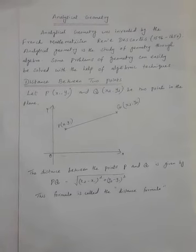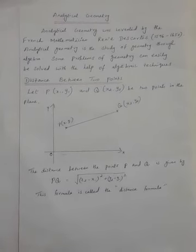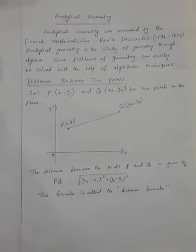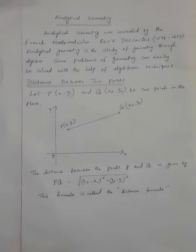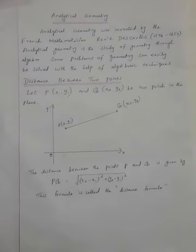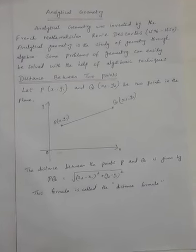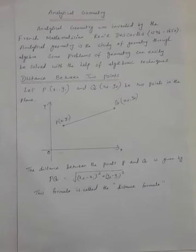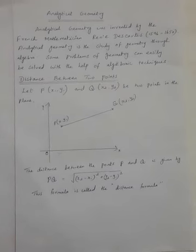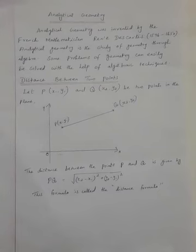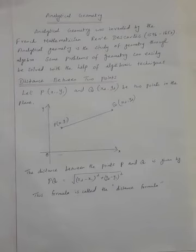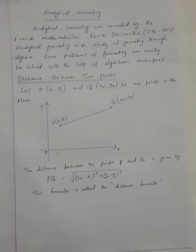Distance between two points in the plane. Let P(X1, Y1) and Q(X2, Y2) be two points in the plane. This diagram shows that the distance between the points P and Q is equal to the square root of (X2 minus X1) whole square plus (Y2 minus Y1) whole square. This formula is called the distance formula.